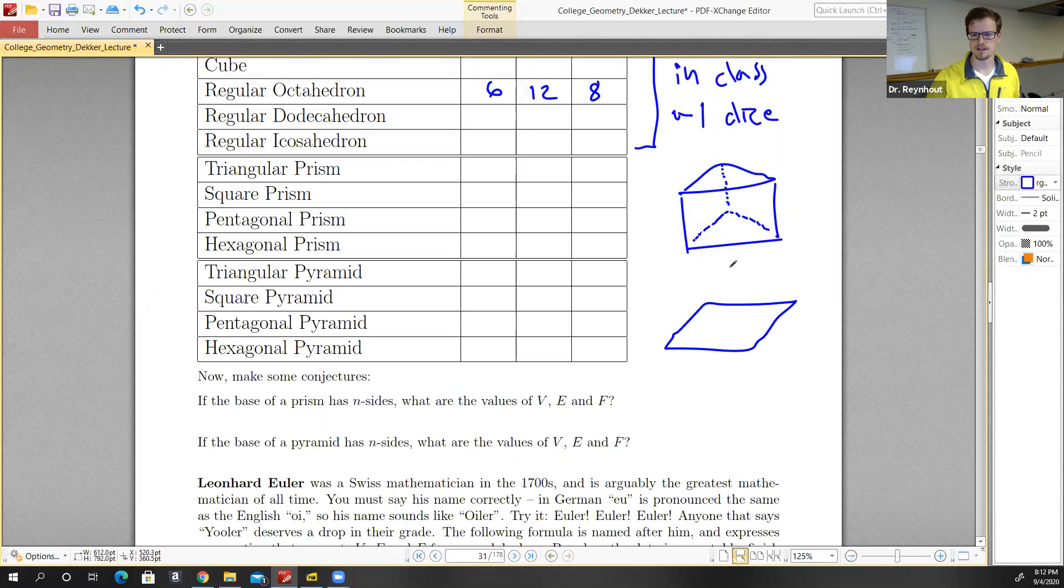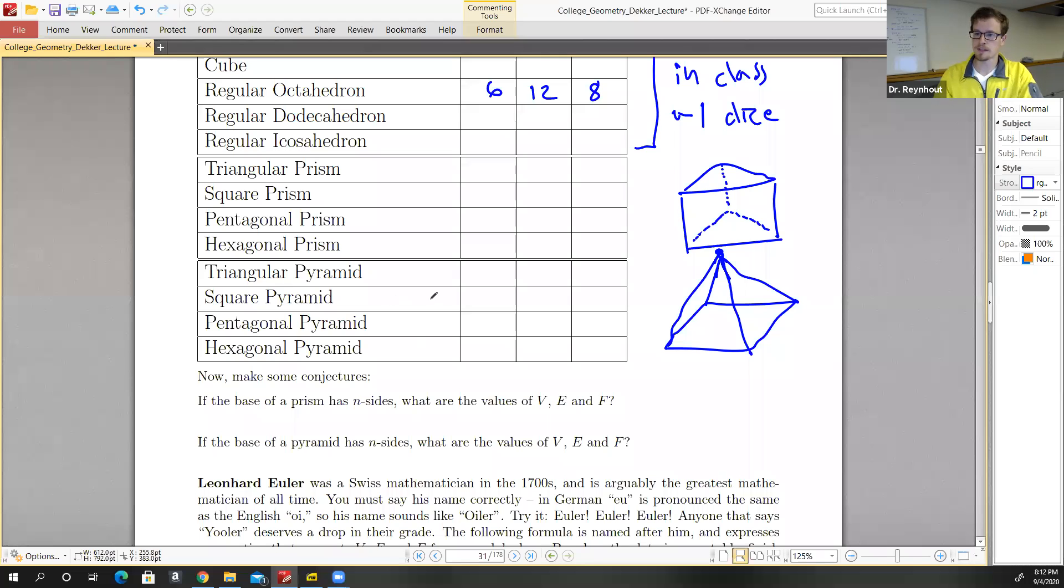So let's say that we have a square base that looks like this. And I should have made some of these lines dashed. But I think this gives us a good idea. So we can draw this sort of a thing for the pyramids. So I trust that you guys can draw these and fill them in. And if you can't, that's what class is for, right?